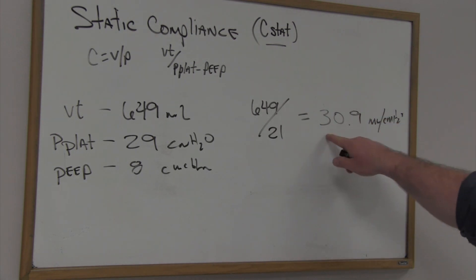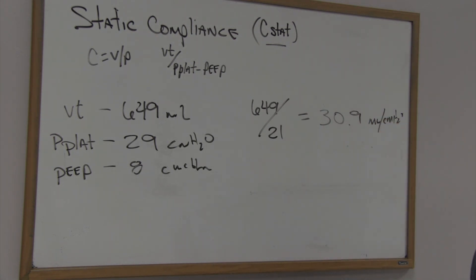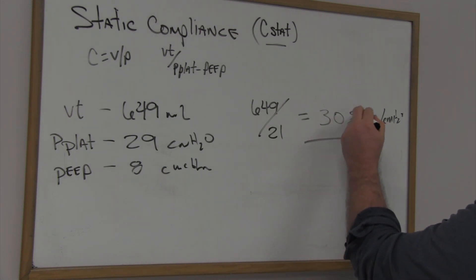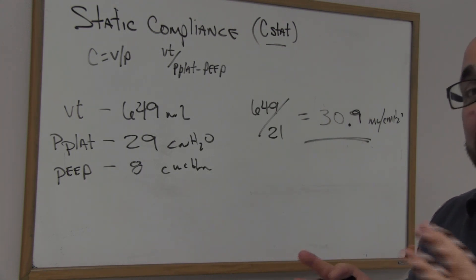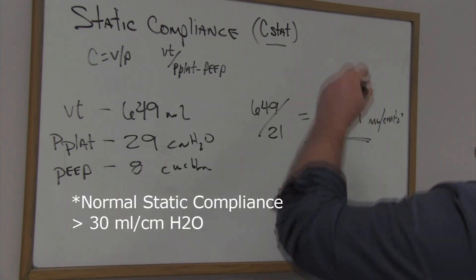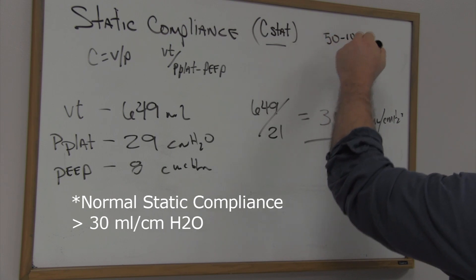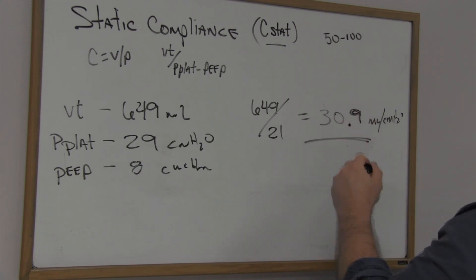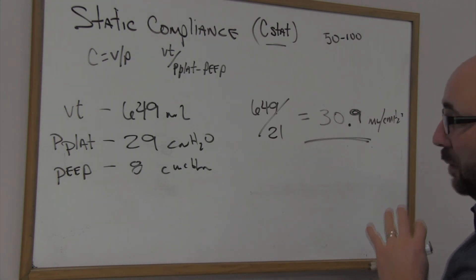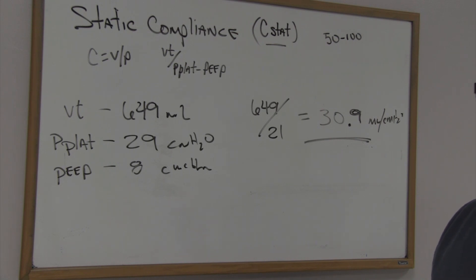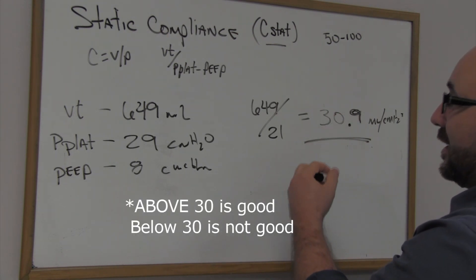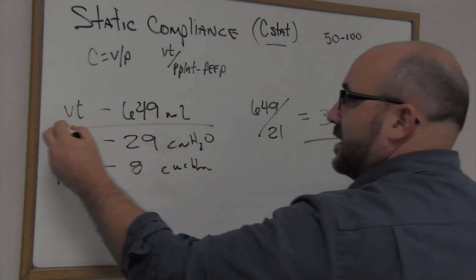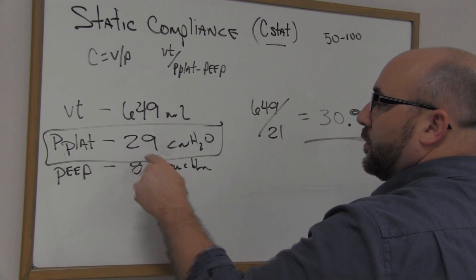So we calculate: 649 ÷ 21 = 30.9 mL/cmH₂O. That is the static compliance for that test lung. Dynamic compliance normal is usually 50–100 mL/cmH₂O. For static compliance, below 30 — in the 20–30 range — is going to be really good. But mainly what you're looking at is the plateau pressure itself: anything below 30, ideally in the low 20s, tells you the lungs are not very stiff.